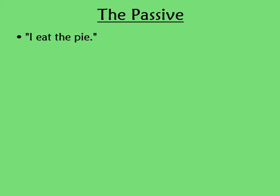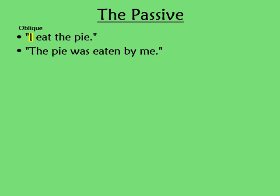The last valency-reducing operation, and probably the one you're most familiar with, is the passive. This is where the object of a sentence becomes the first word, and you can choose to delete the subject if you want — the deletable subject is called the oblique. For example: 'I eat the pie,' or 'the pie was eaten by me,' or 'the pie was eaten.' Valency reduced.